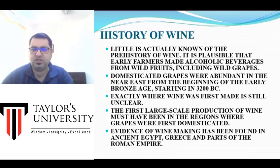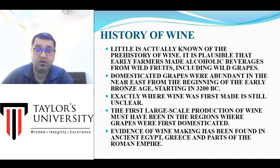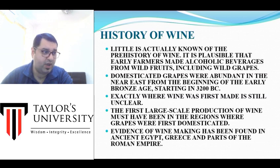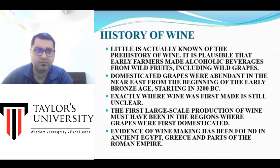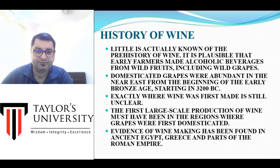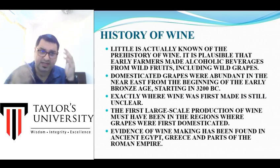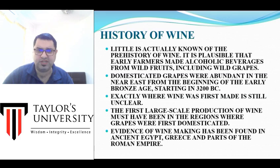Not much is known about the exact history of making wines, but wine has been made for nearly 5,000 years in different parts of the world. Where it was first made is not clear — we found wine remnants in Greece, Rome, Egypt, and ancient India — but those early styles of winemaking have been lost to time.